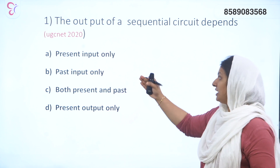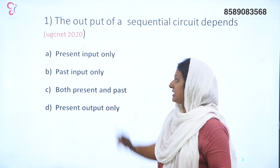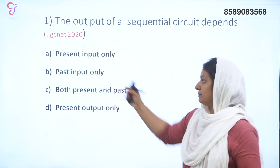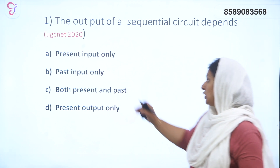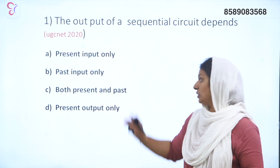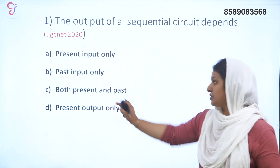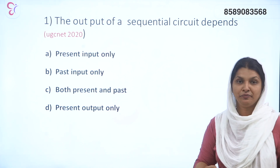The options are: Option A — present input only; Option B — past input only; Option C — both present and past; Option D — present output only.